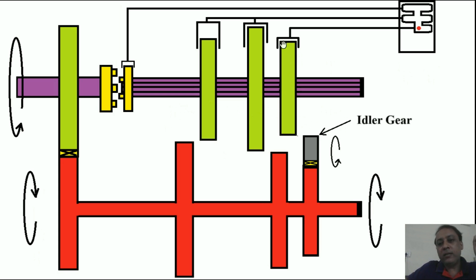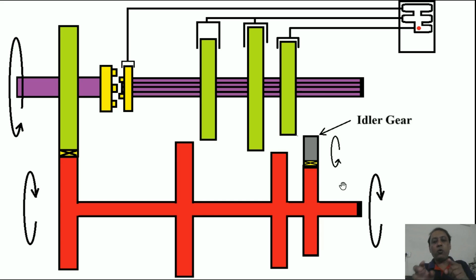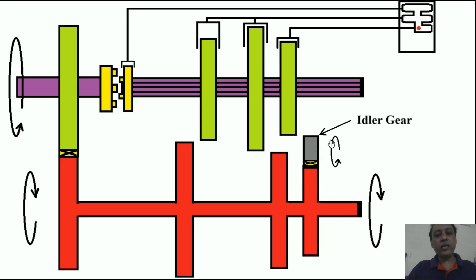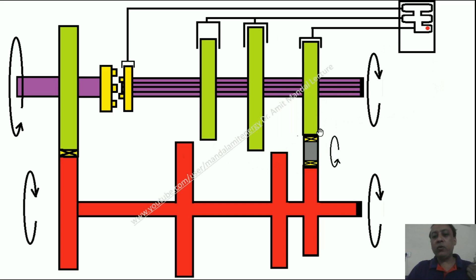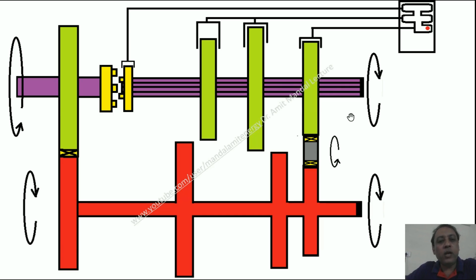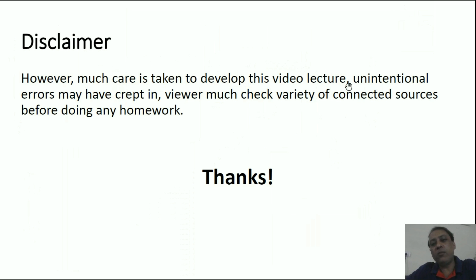Now we will talk about the reverse gear. In reverse gear, one more gear is added — the driven reverse gear and the driver reverse gear shown in red on the lay shaft — and in between there is also an idler gear. When two gears mesh, if one spins clockwise the other spins anti-clockwise. From the driver gear, the idler gear meshes, so if the driver gear spins clockwise the idler gear spins anti-clockwise. When we shift the gear toward the right, the driven gear starts moving in the opposite direction, so the spline shaft starts moving in the opposite direction.